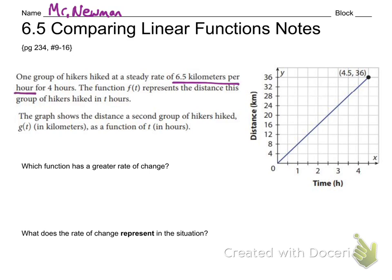Let's start with this first problem. One group of hikers hiked at a steady rate of 6.5 kilometers per hour for four hours. The function f represents the distance this group hiked in t hours. The graph shows the distance a second group of hikers hiked, g(t), as a function of t. A lot of students mistake this and think the graph represents the sentence — but no, these are two different functions. f(t) is the paragraph on the left; g(t) is the graph on the right.